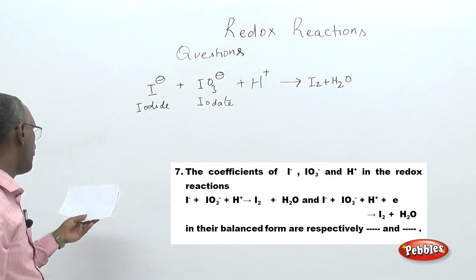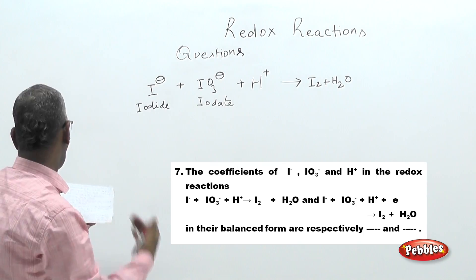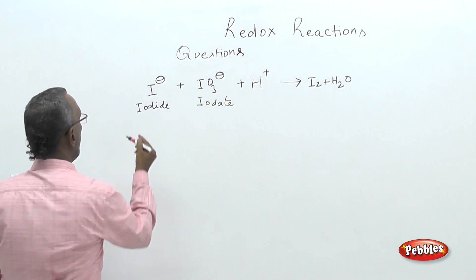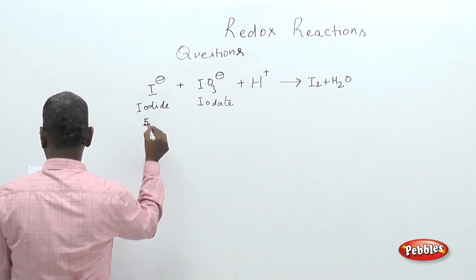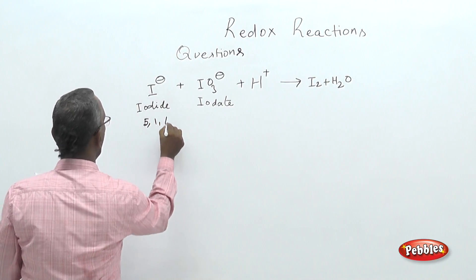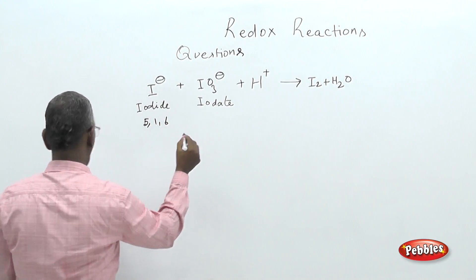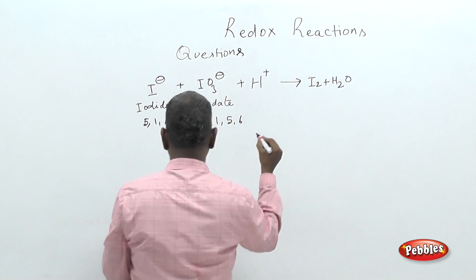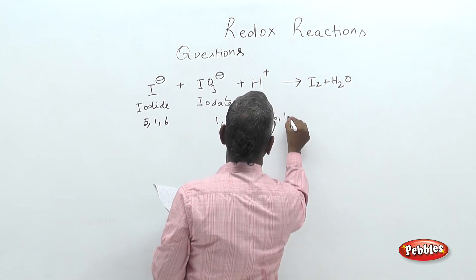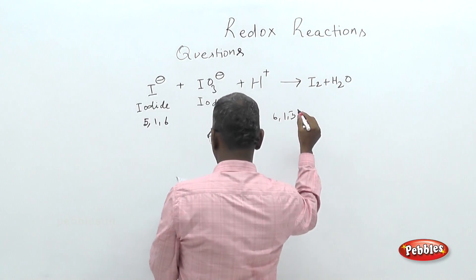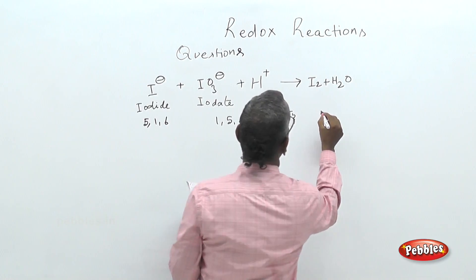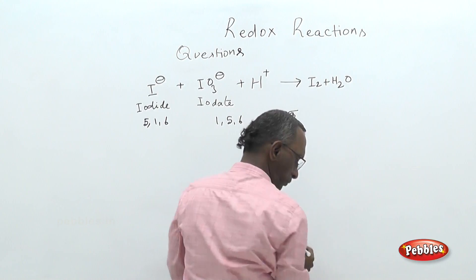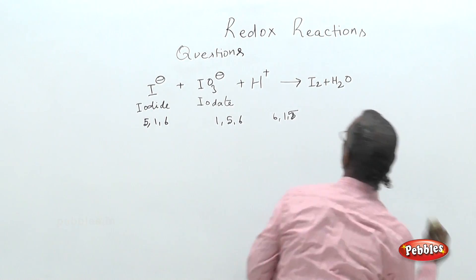We have to identify the coefficients from the given choices. The options are: A) 5, 1, 6; B) 1, 5, 6; C) 6, 1, 5; D) 6, 1, 5; and E) 5, 6, 1.